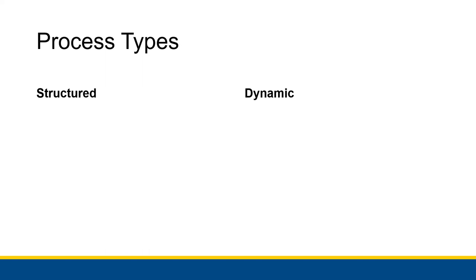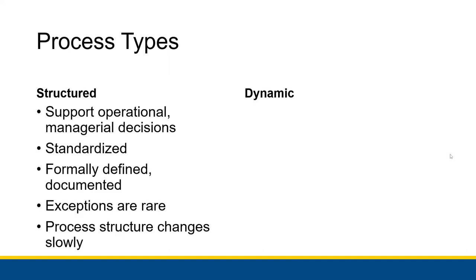This is just a small example of one particular business process adding value by transforming inputs — the customer's desired order — into outputs, which could be an out-of-stock notification, a payment rejection, special terms, or an approved order transmitted to the pieces of the business that make sure the customer gets their items. Now there tend to be two types of processes: the structured process and the dynamic process. The structured process supports more of the operational and managerial types of decisions.